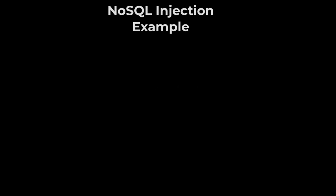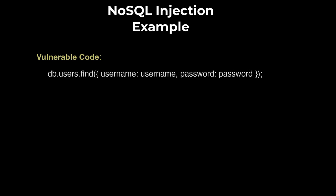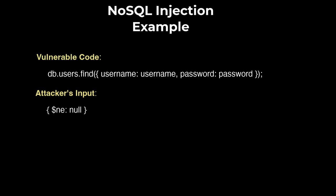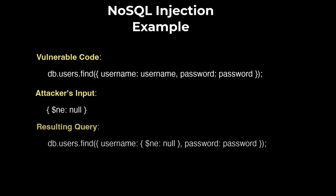Next, a MongoDB injection example. An application uses user input to construct a MongoDB query without proper input sanitization. The vulnerable code, attacker's input, and resulting query are shown here. This query returns all users, potentially exposing sensitive information.